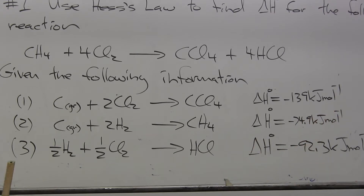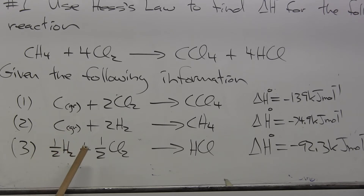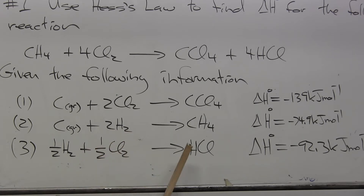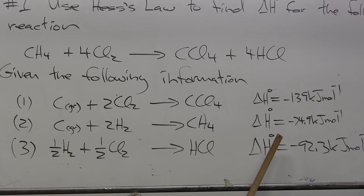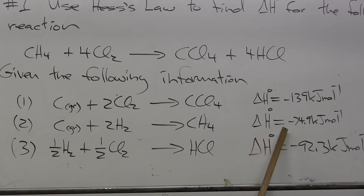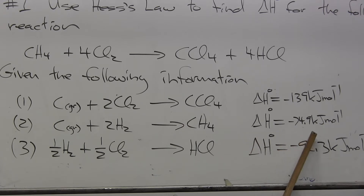Reaction two: carbon graphite plus two molecular hydrogens, 2H2, goes to produce one CH4, one methane molecule. The enthalpy ΔH° for that process is equal to minus 74.9 kilojoules per mole.